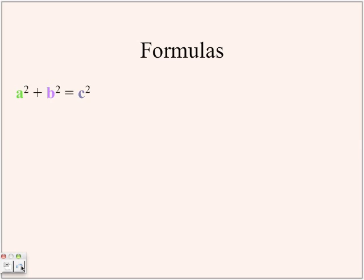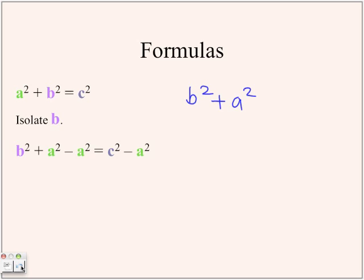This is the Pythagorean theorem: a squared plus b squared equals c squared. You want to isolate b. Since there's a squared plus b squared, you want to subtract a squared so you have b squared on one side. Because plus a squared minus a squared cancels out, you're left with b squared equals c squared minus a squared.